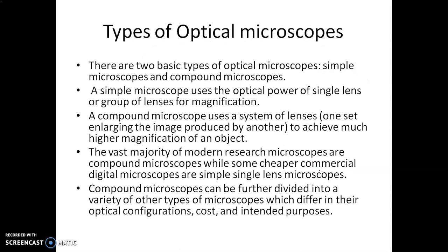The types of optical microscopes are the simple microscope and the compound microscope. A simple microscope uses the optical power of a single lens or a group of lenses for magnification.